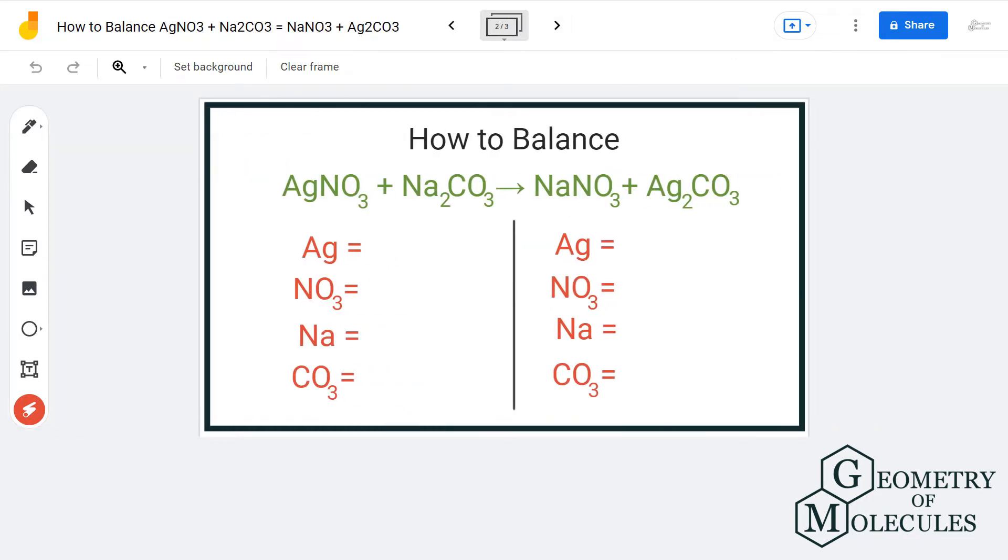To make this process really easy, I am going to consider NO3 and CO3 as polyatomic ions and count them as is. This will make the entire process very easy for you. So let's start counting the number of atoms on both reactant and product side.